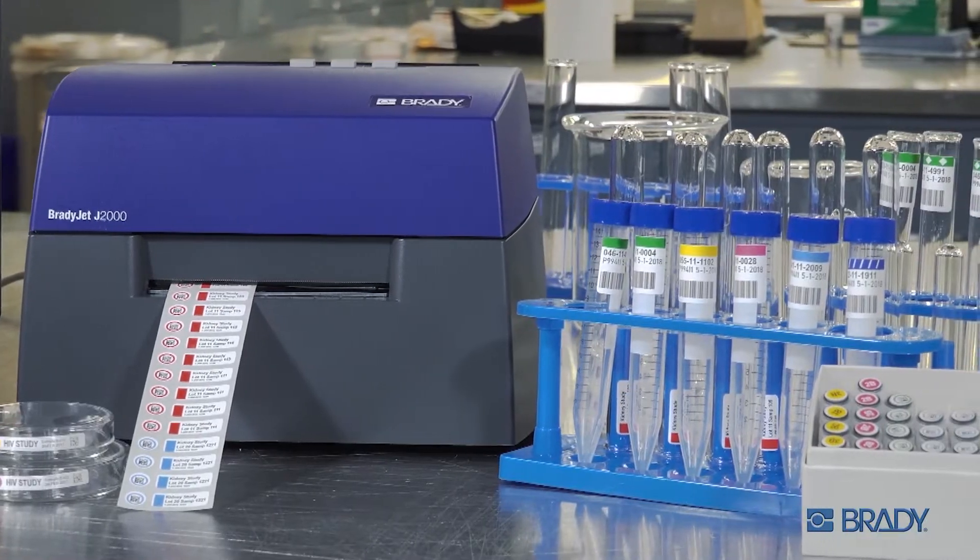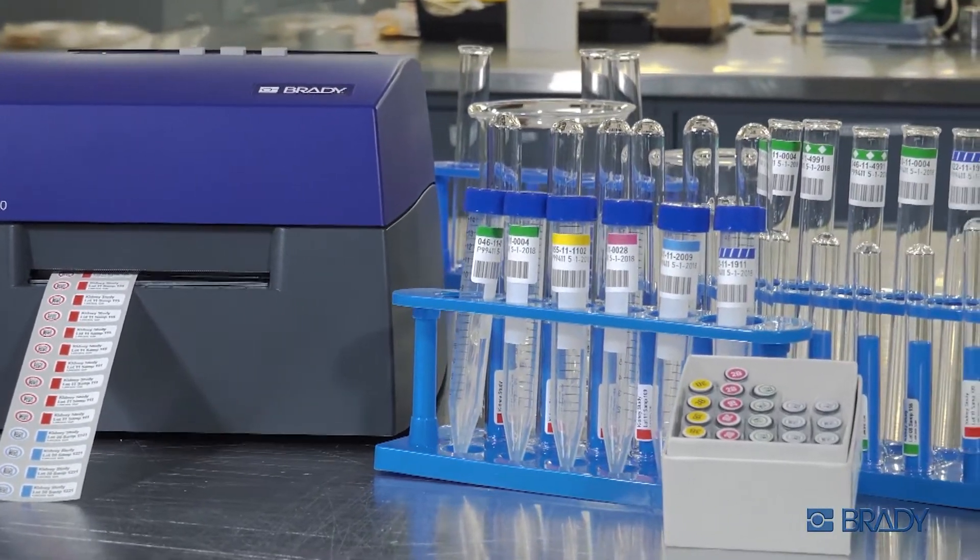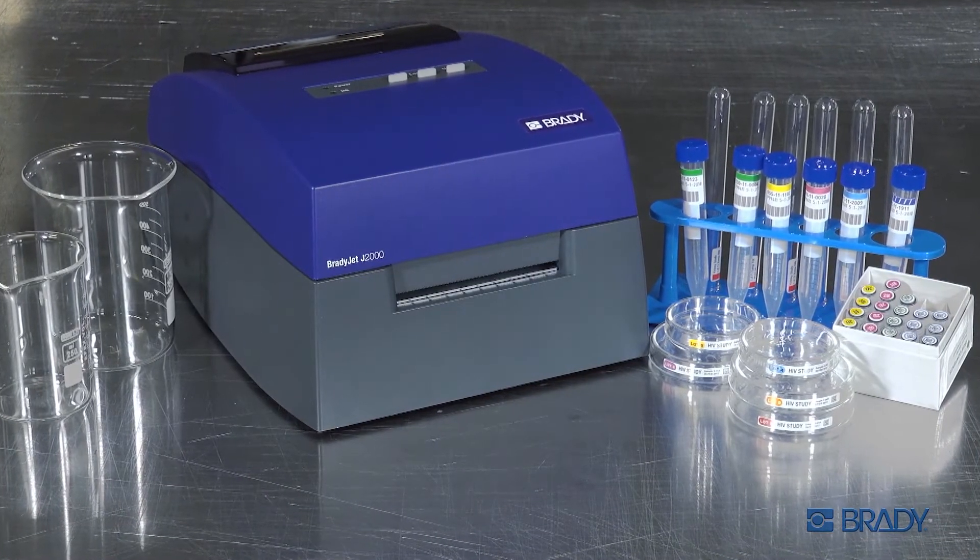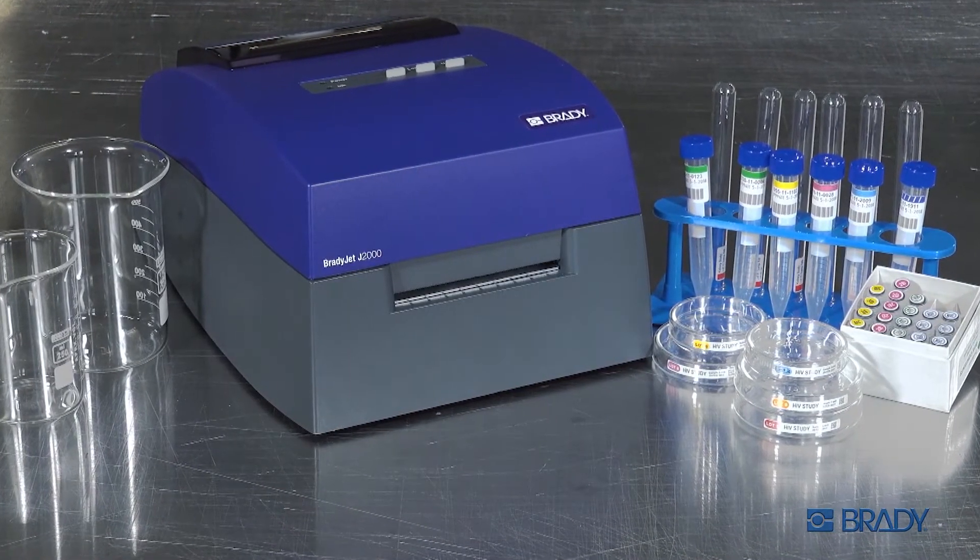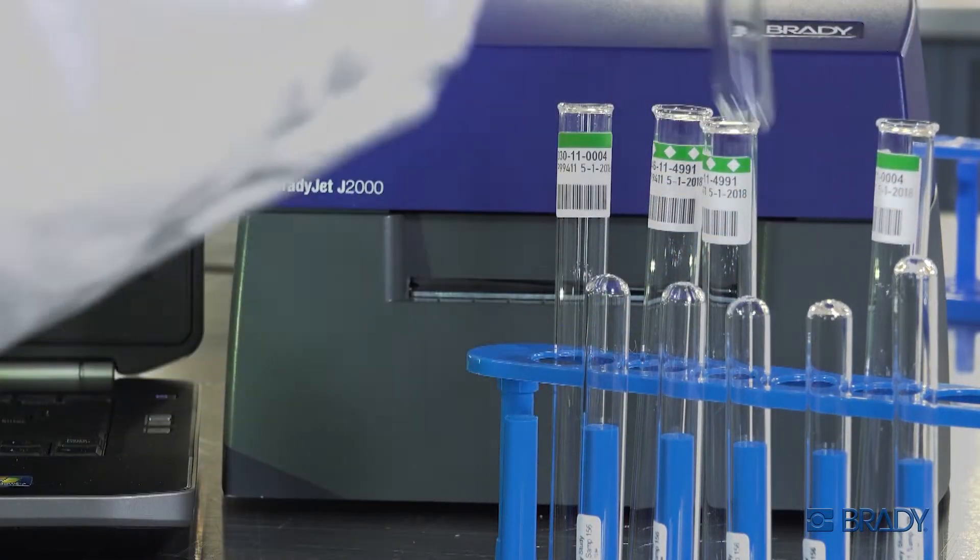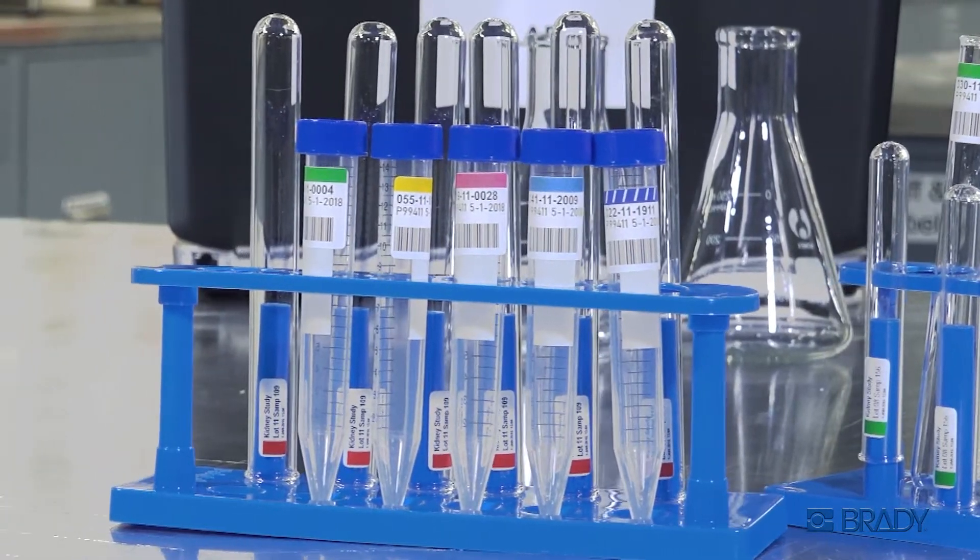Add the efficiency and accuracy of vibrant color labeling to your workflow with the BradyJet J2000 Color Label Printer. The human brain can recognize and categorize colors faster and with fewer errors than with alphanumeric characters alone.